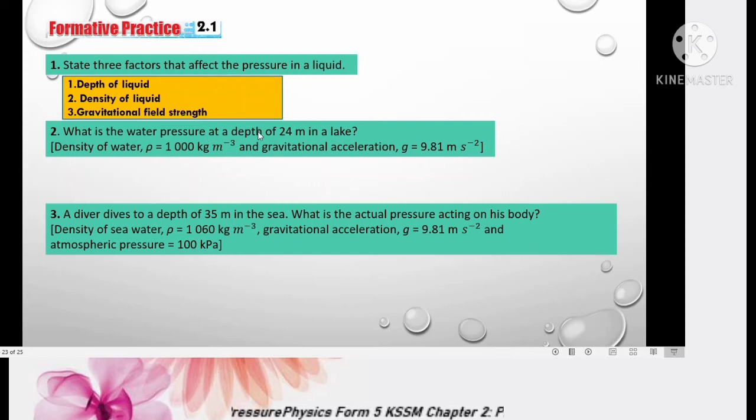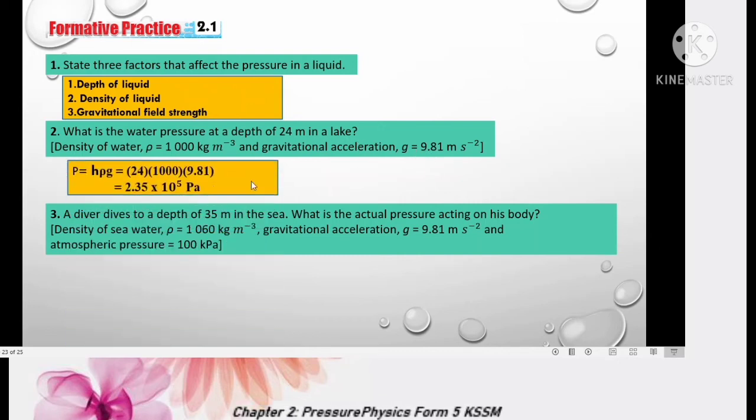Number 2, what is water pressure at depth of 24 meter in the lake? Given depth 24 meter, density and gravitational acceleration g. You can see here, the word water pressure meaning pressure due to water only. Thus, we use formula P equals H rho g. We get H is 24 because it's already in meter. If not in meter, you need to convert to meter. So density 1000, g 9.81. Thus, you get 2.35 times 10 to the power 5 Pascal. If you want to write in kilo Pascal, it become 235 kilo Pascal.